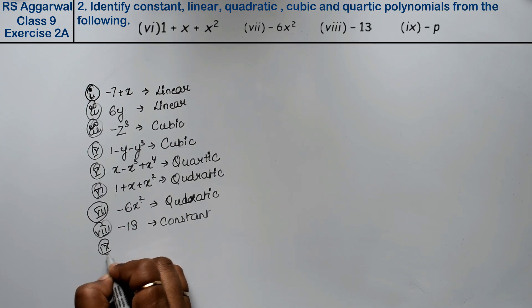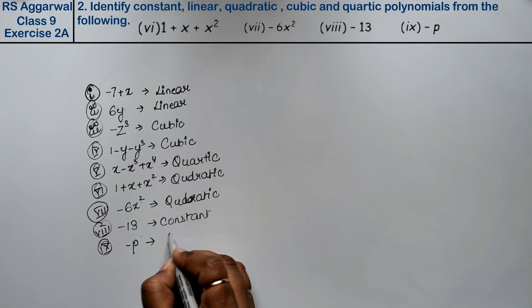Let's do the 9th part. 9th part is -P. Its power is 1, that means linear.